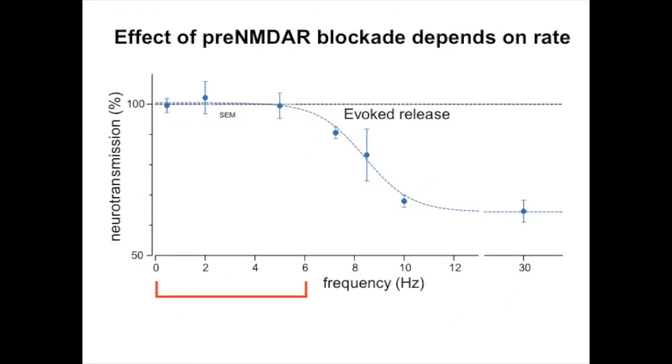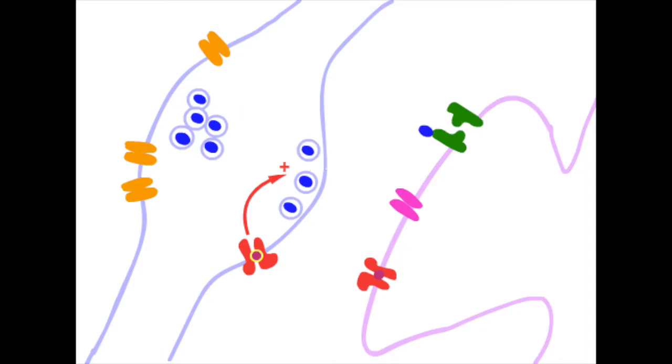At low frequencies, presynaptic NMDA receptors regulate spontaneous but not evoked release. Interestingly, presynaptic NMDA receptors regulate spontaneous release in a magnesium-insensitive manner, suggesting metapotropic signaling.